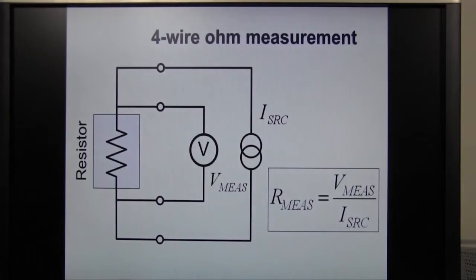This slide shows you how to measure a resistor by general 4-wire ohm measurement. Use a DC current source to force current and measure the voltage drop across the resistor by voltmeter. 4-wire measurement is a common method to eliminate the effect of lead resistance.